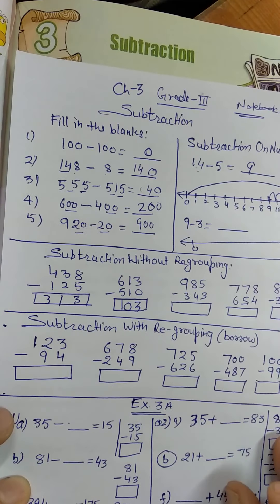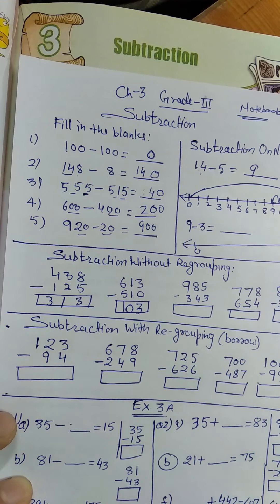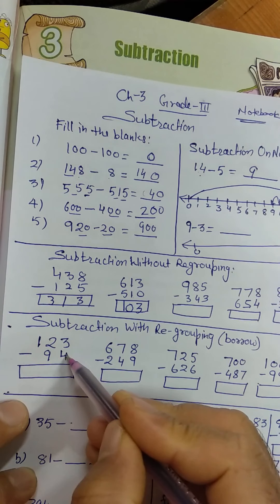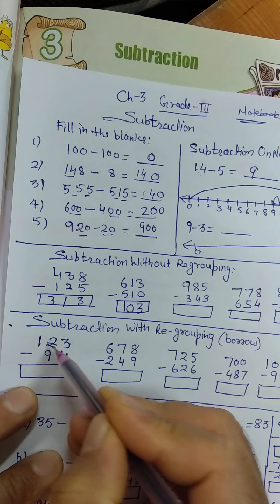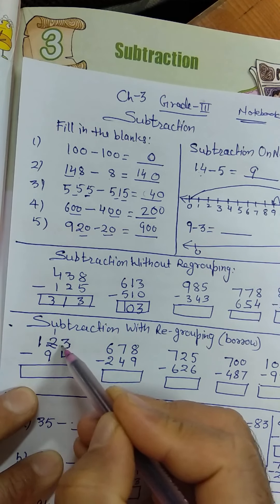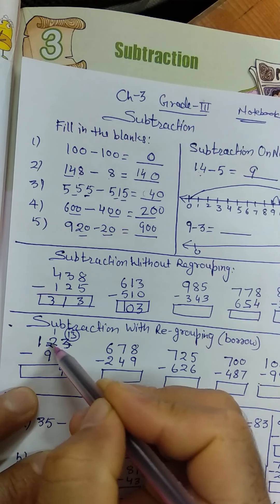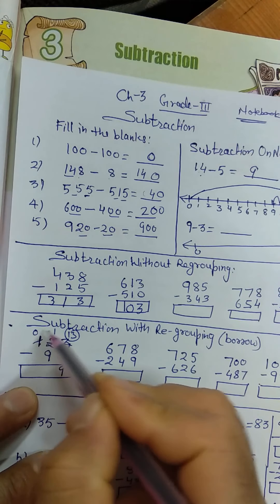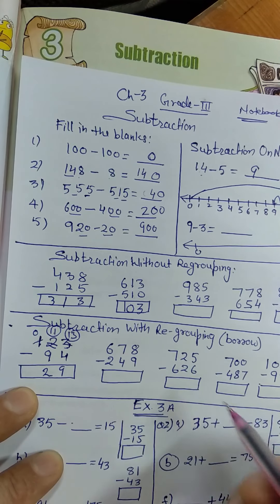Now let's go over subtraction with regrouping — that is, with borrowing — for 3-digit numbers. For example: 4 is greater than 3, so you can't subtract 4 from 3. Take a borrow from 2; 2 becomes 1 and this 3 becomes 13. So 13 minus 4 is 9. Then 9 is greater than 1, so take a borrow again; 1 becomes 0 and here it becomes 11. 11 minus 9 is 2.